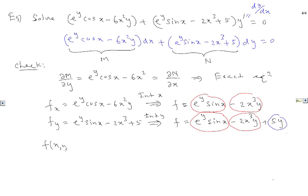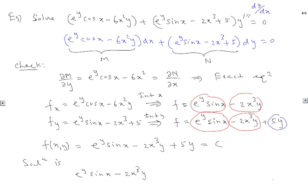Writing each term once, the solution is f(x,y) = eʸsin(x) - 2x³y + 5y = C. This is an implicit solution for y, since you cannot solve explicitly for y. That is the shortcut method for exact equations.